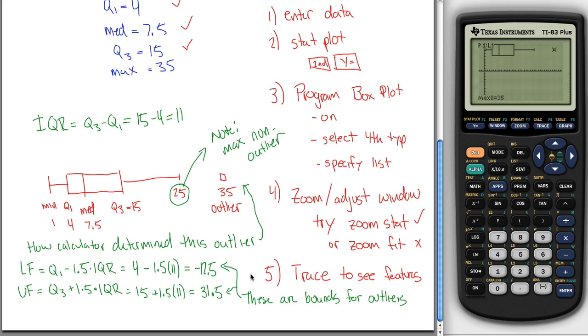The one thing I want to point out is these fences, these bounds right here, don't appear in your picture. That's a mistake everyone makes as they try to graph them. You don't do that. You just look at these to figure out what's an outlier.